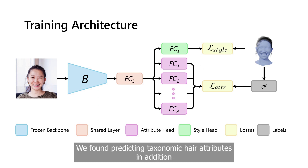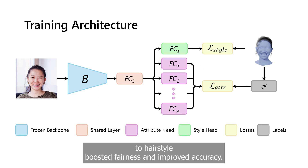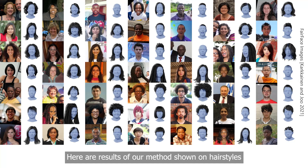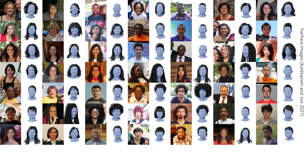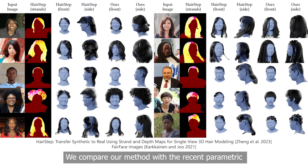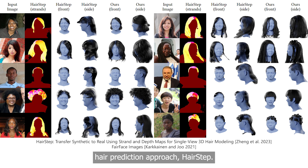We found that predicting taxonomic hair attributes in addition to hairstyle boosted fairness and improved accuracy. Here are results of our method shown on hairstyles varying in length, curliness and styling. We compare our method with the recent parametric hair prediction approach, HairStep.